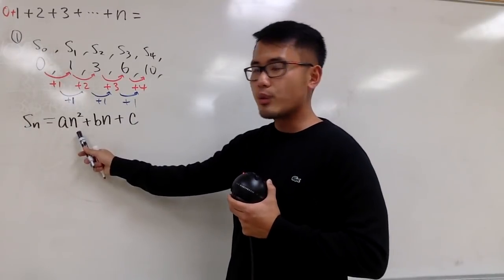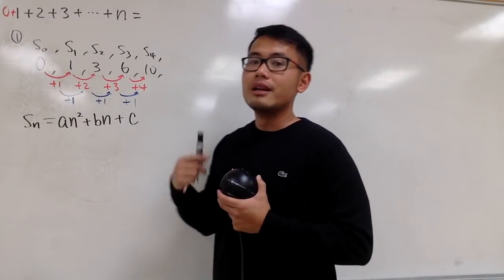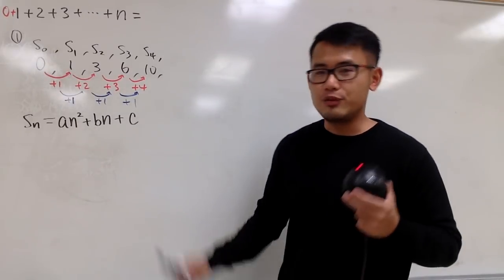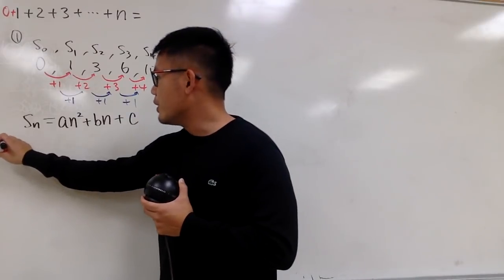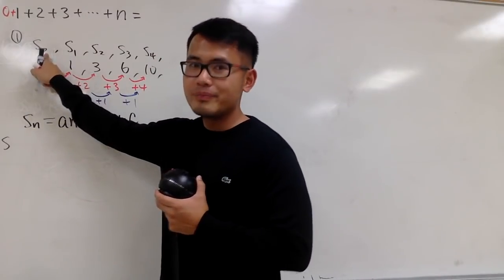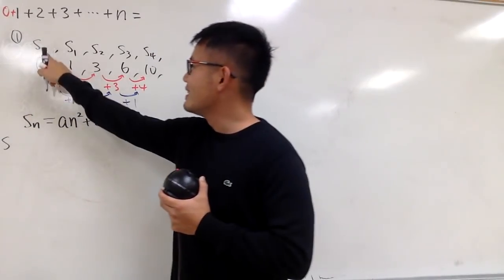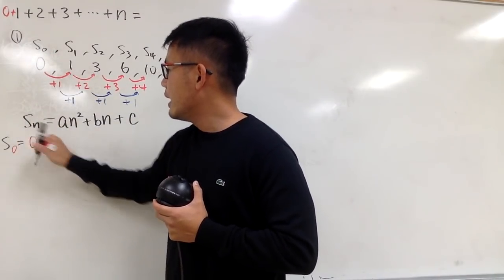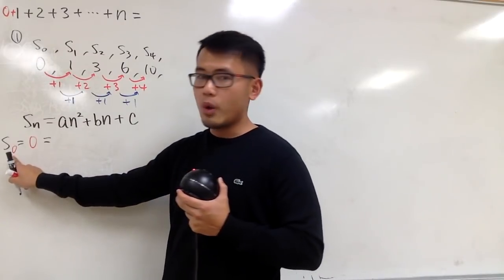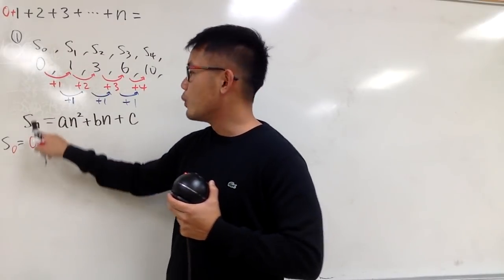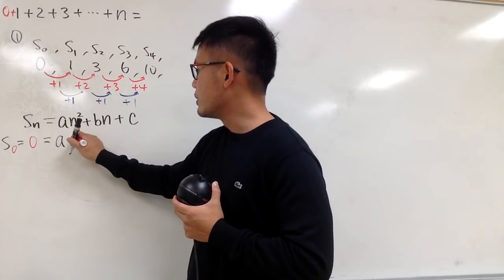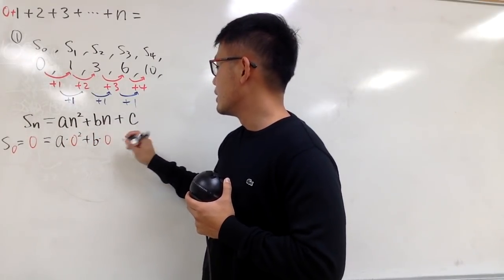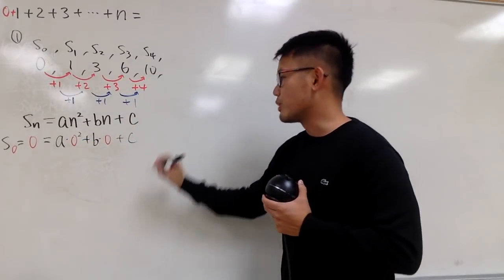We write down an squared plus bn plus c. Our goal is to figure out the values for a, b, and c. We know S0 equals 0 — this is why we love 0. When n equals 0, we plug into the equation, and it's super nice: you get c equals 0 right away.